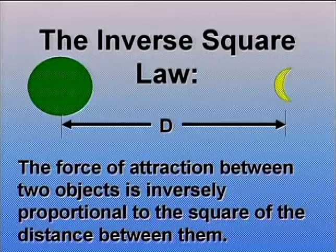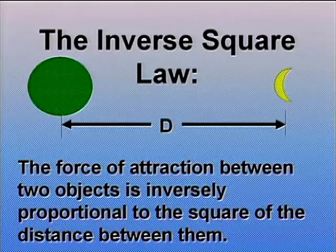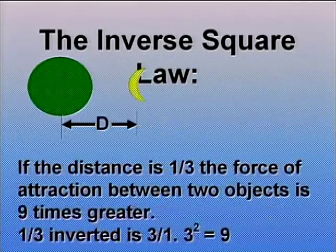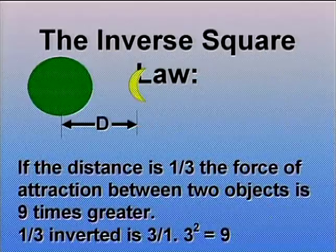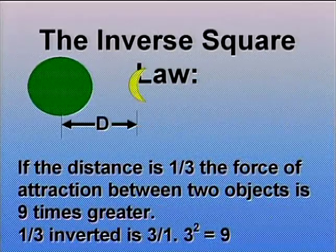The inverse square law tells us that if two objects are attracted to each other, like the earth and the moon, the force of attraction is inversely proportional to the square of the distance between them. In English, that means if you bring the moon into one-third the distance, you take one-third, flip it over, and square it — it's now nine times the gravitational pull. Inverse square laws apply when you're dealing with forces involving gravity, light, magnetism, and girls.